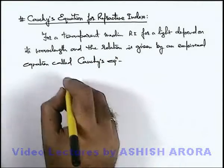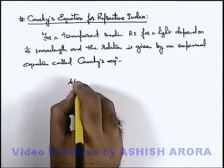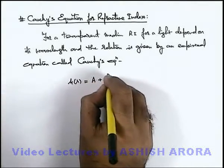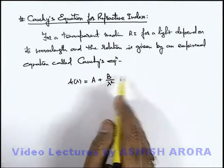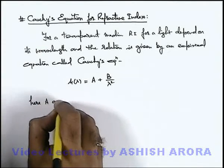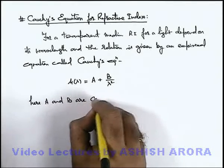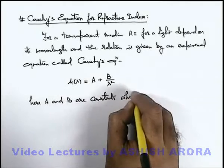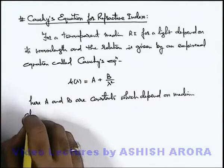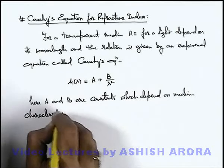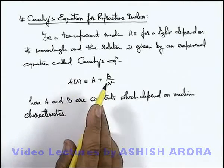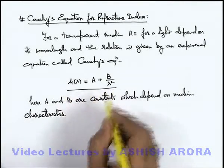This equation is stated as: the refractive index of a medium, which we are denoting by mu (μ), varies with wavelength and is given as A plus B divided by lambda squared (μ = A + B/λ²). Some higher order terms are also present but with negligible coefficients, so we ignore them. Here A and B are constants which depend on the medium characteristics. So for a given medium in which the light is passing, A and B are constant, and the refractive index for a specific light of wavelength lambda is given as A + B/λ².